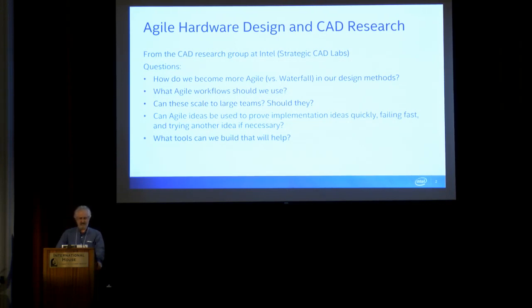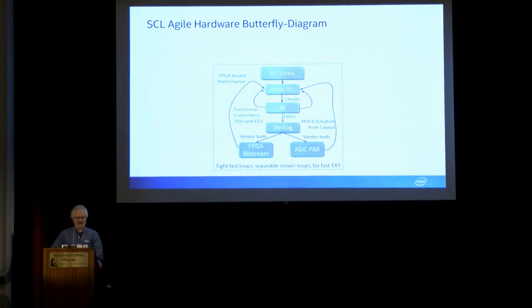And trying to figure out what tools we can add on to Chisel itself to help with that. This is one way we look at it—we call it the butterfly diagram. There's this flow where you start with parameterized RTL, go through Chisel 3 to the FIRRTL flow.